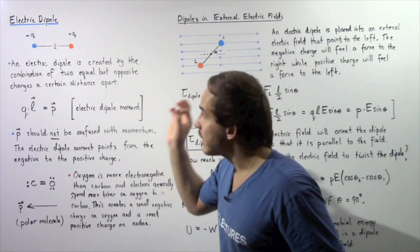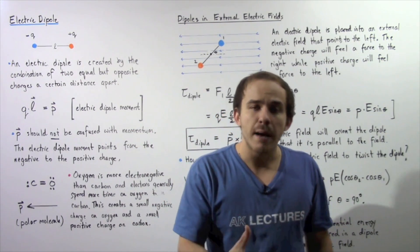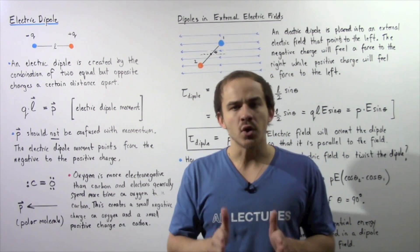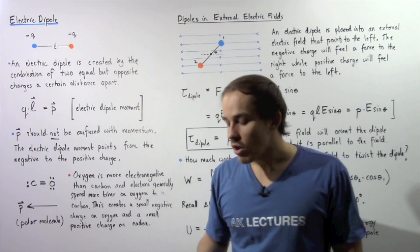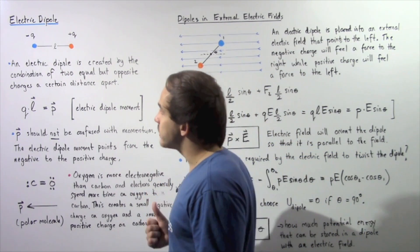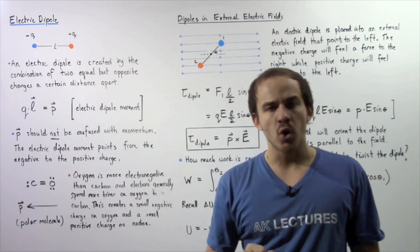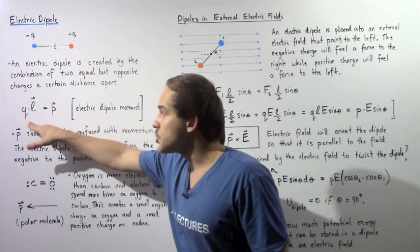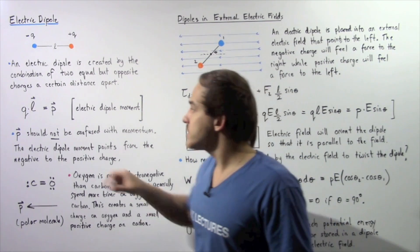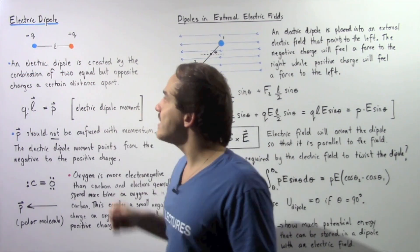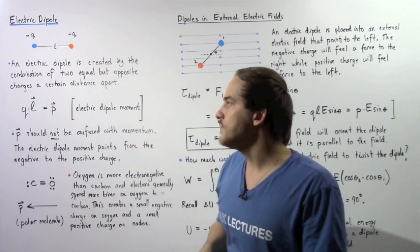An electric dipole is created by the combination of equal but opposite electric charges that are separated by a certain distance — in this case, given by l. Whenever we have an electric dipole, we define the electric dipole moment as the product of the charge Q and the distance l between our two charges. Notice the Q in both cases is exactly the same because they have the same equal quantity of charge.